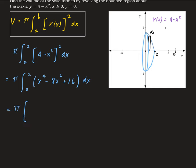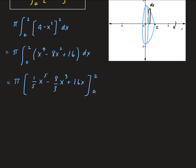So that's going to give us 1/5 x to the 5th minus 8/3 times x cubed plus 16x. And we're going to evaluate this from 0 to 2.